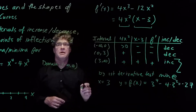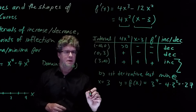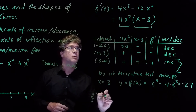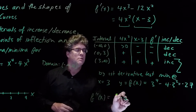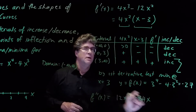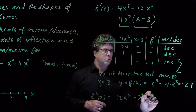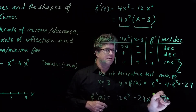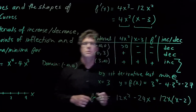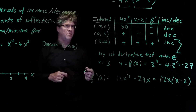Now for the second derivative — we differentiate once again and get f double prime of x equals 12x squared minus 24x. This factors as 12x times (x minus 2).